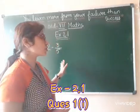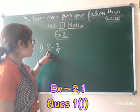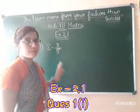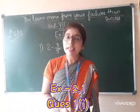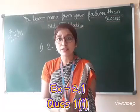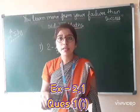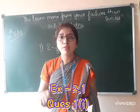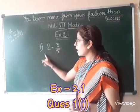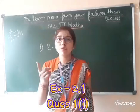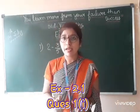Question number 1 is: solve the following. The sum given is 2 minus 3 upon 5. Now whenever you are adding and subtracting any fraction, you have to check that the denominator of both the numbers should be the same. If they are not same, that means you have to make them same — then only you can add and subtract.